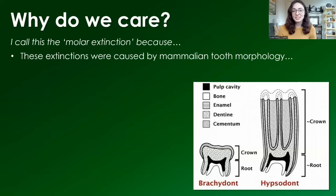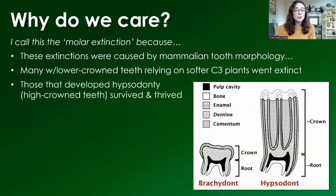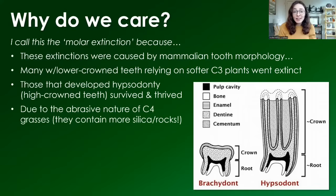But hold on — why should we care about this? Well, C4 grassland expansion greatly altered ecosystems, specifically causing a shift in mammalian evolution and extinction. Many large herbivores that had adapted to browsing on C3 trees and shrubs struggled as C4 grasslands expanded, some even going extinct. I often call this the molar extinction, because these extinctions of certain types of mammals were based on tooth morphology. Many of those with lower-crowned teeth, which relied on softer C3 plants, went extinct, while those that developed high-crowned teeth survived and thrived. This was caused by the abrasive nature of C4 grasses because they contain more silica — in other words, they have tiny rocks in them.